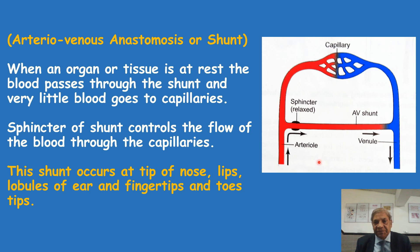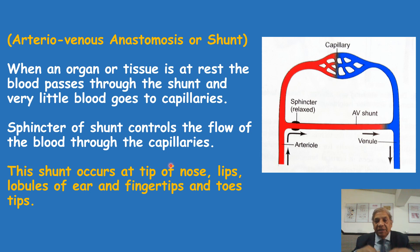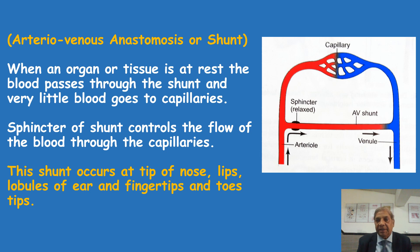This shunt mechanism occurs at many places in our body — specifically peripheral locations. The shunt occurs at the tip of the nose, in the upper and lower lips, in the lobules of the ear, on the tips of the fingers, and on the tips of the toes. These are all peripheral structures. This kind of shunt is not found deep inside the body. Understanding these locations will help you see why they serve a particular function.